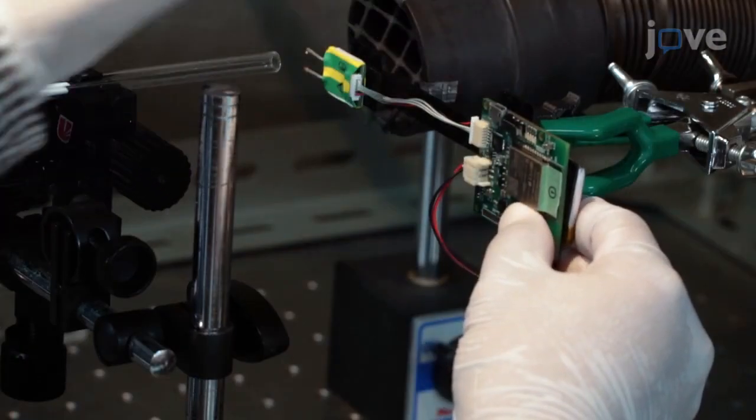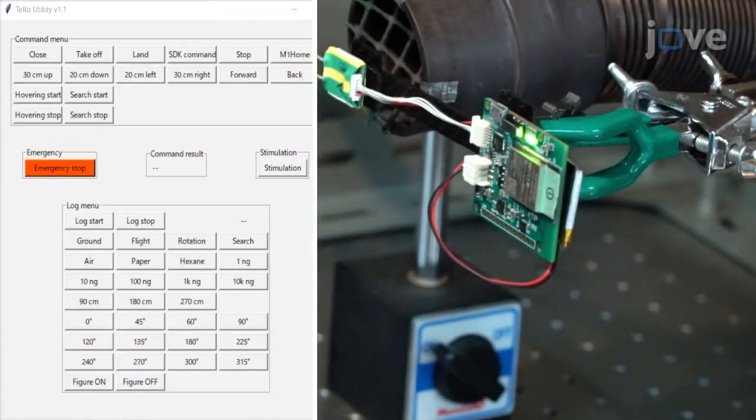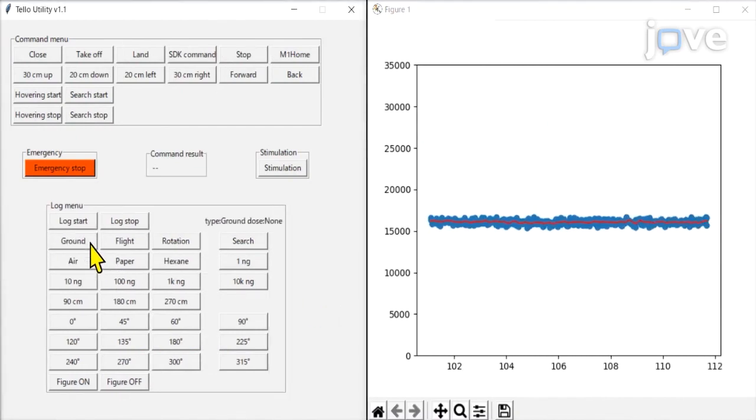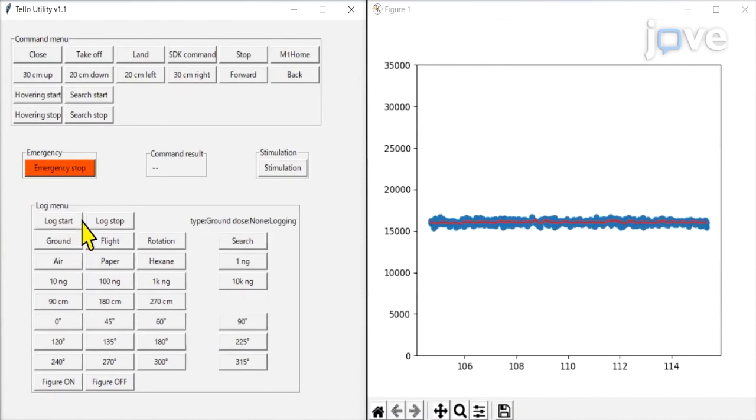Switch on the EAG device. Then run the data acquisition program on the PC. Press the ground button in the log menu to decide the experimental state, and then press the log start button for data acquisition.